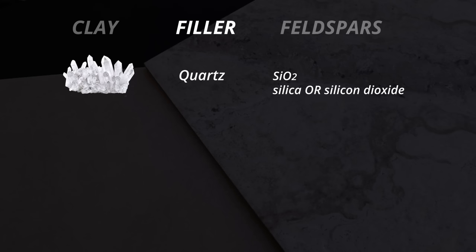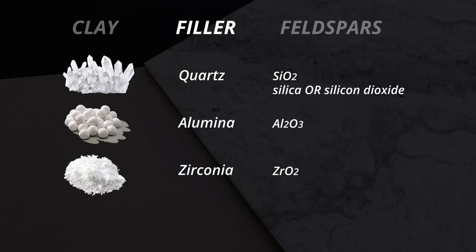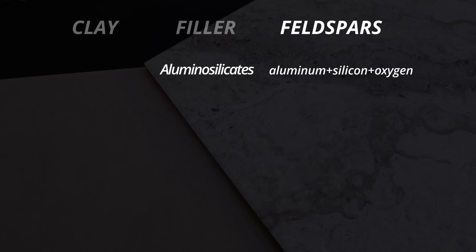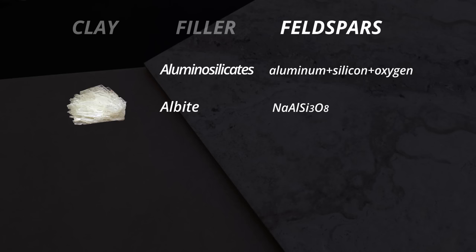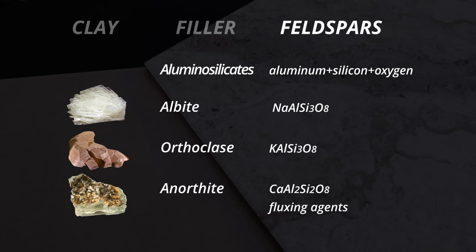The next ingredient is a filler like quartz or silica, alumina or zirconia. These give tiles mechanical strength and shape. The third ingredient is feldspars — some examples are albite, orthoclase and anorthite. Feldspars act as fluxing agents to reduce the melting temperature and fuse all the materials together.